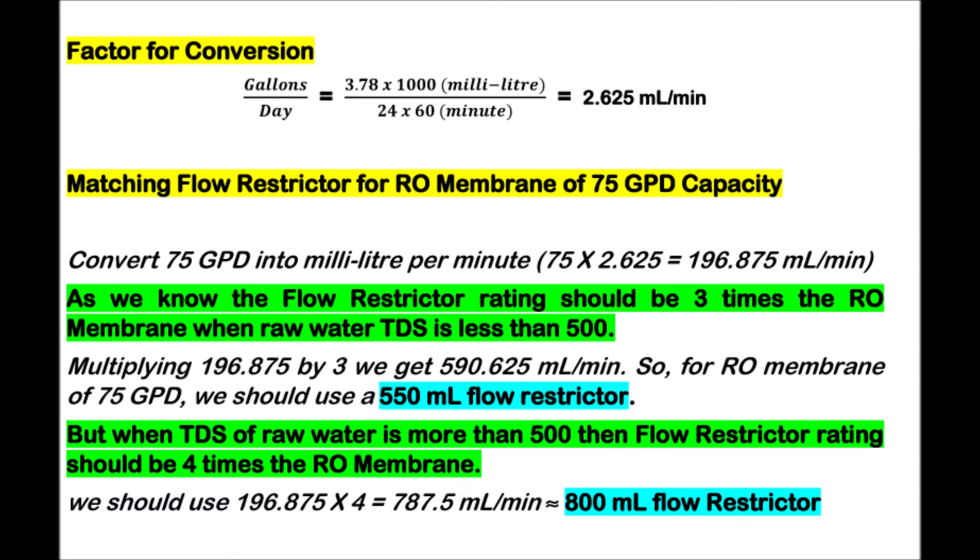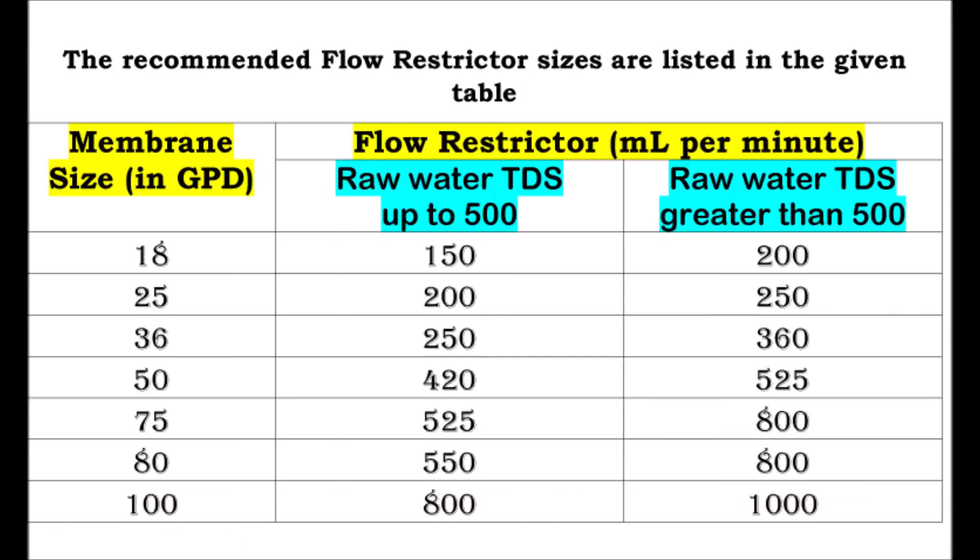But when the TDS of raw water is more than 500, the flow restrictor rating should be 4 times the RO membrane capacity, so we should use an 800 ml flow restrictor. To make it simple, the recommended flow restrictor sizes are listed in the given table.